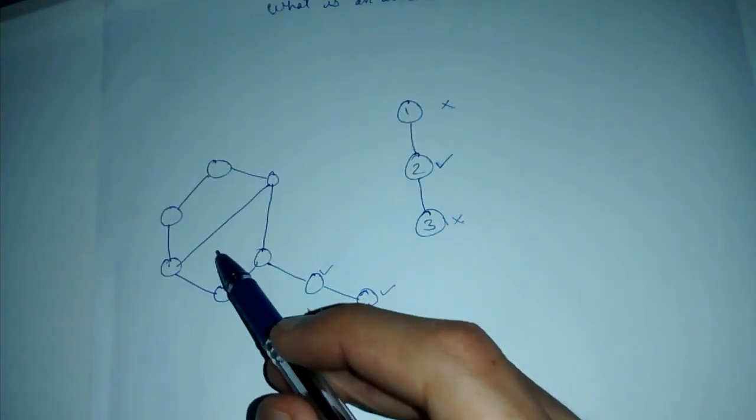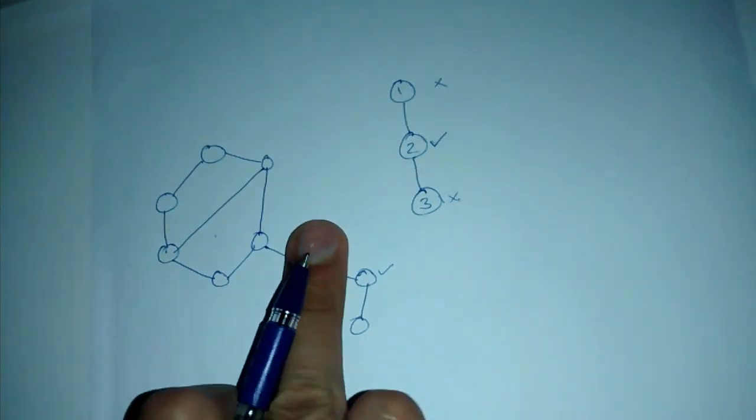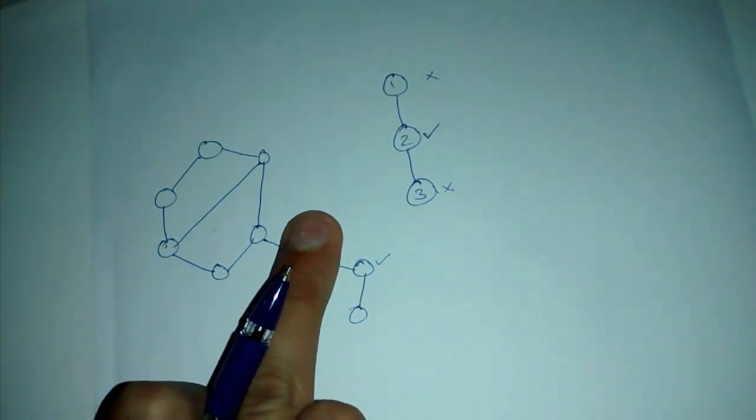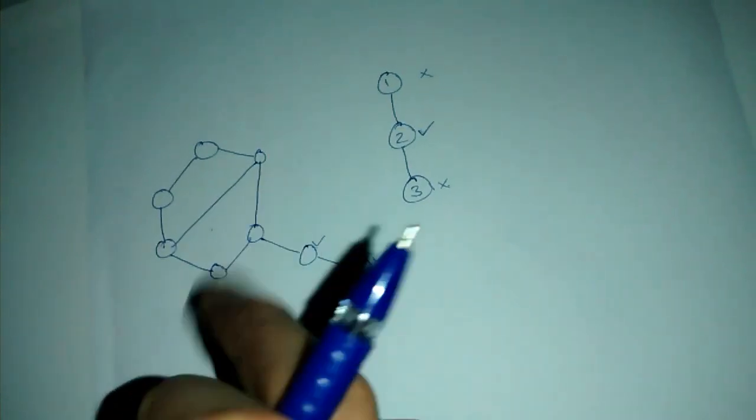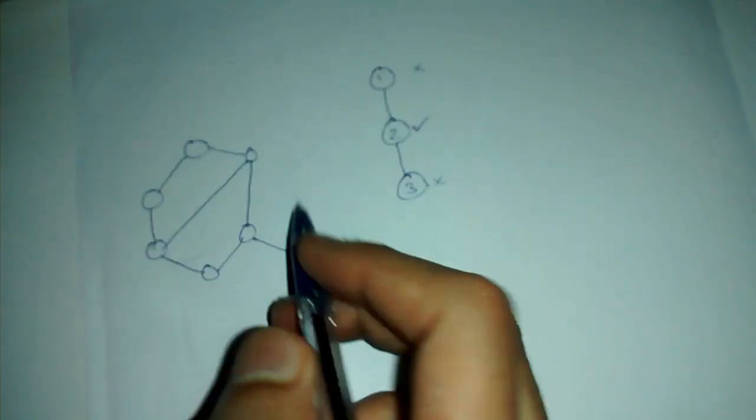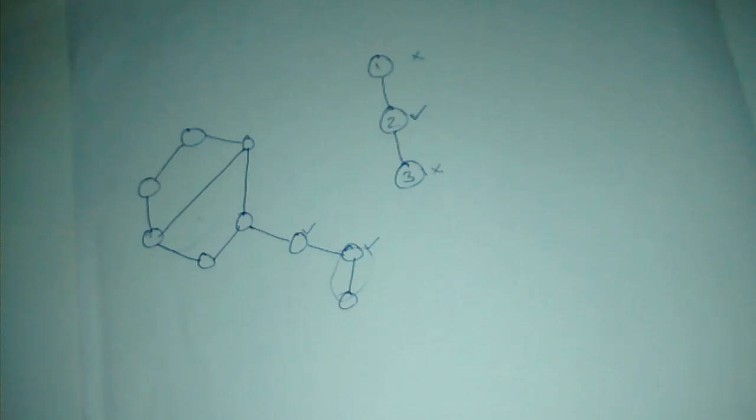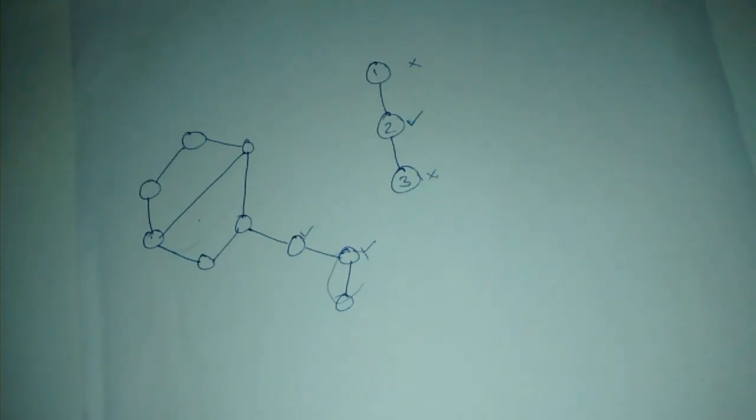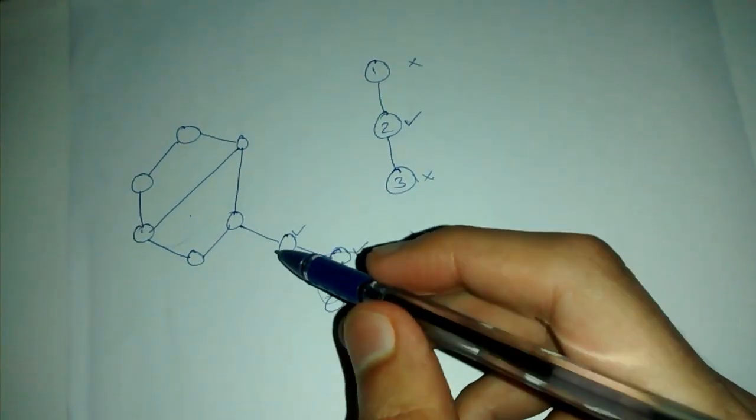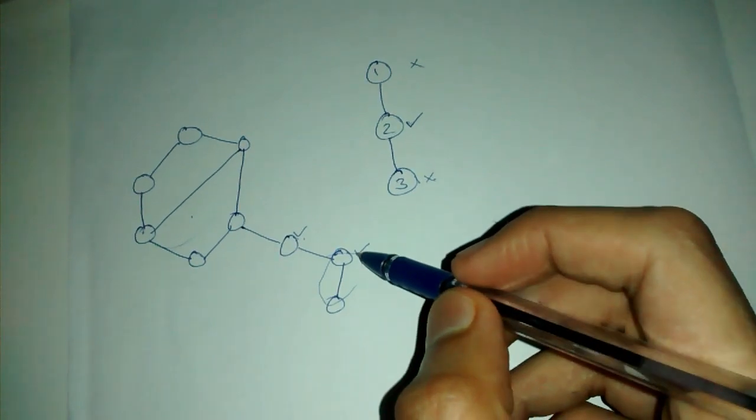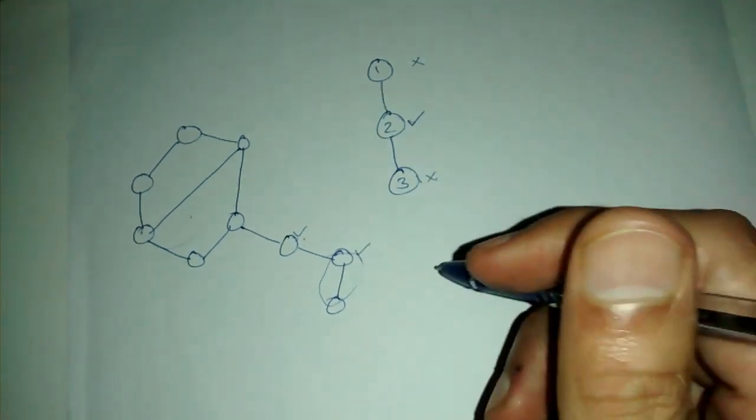Now let's see this example. This one is a cut vertex because removing this will give us this and this, so two connected components. So this is a cut vertex. Similarly, this is also a cut vertex and so on.